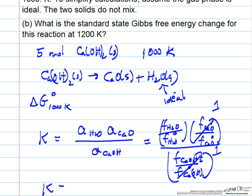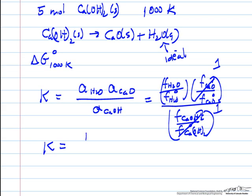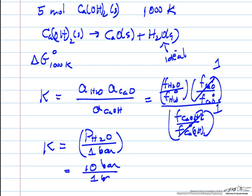And our equilibrium constant, because it's an ideal gas, is fugacity of water in the gas phase, pressure of water divided by standard state conditions, where ideal gas pressure at 1 bar means fugacity is 1 bar, which means we have 10 bar, which is the equilibrium pressure, over 1 bar. So our equilibrium constant is 10.